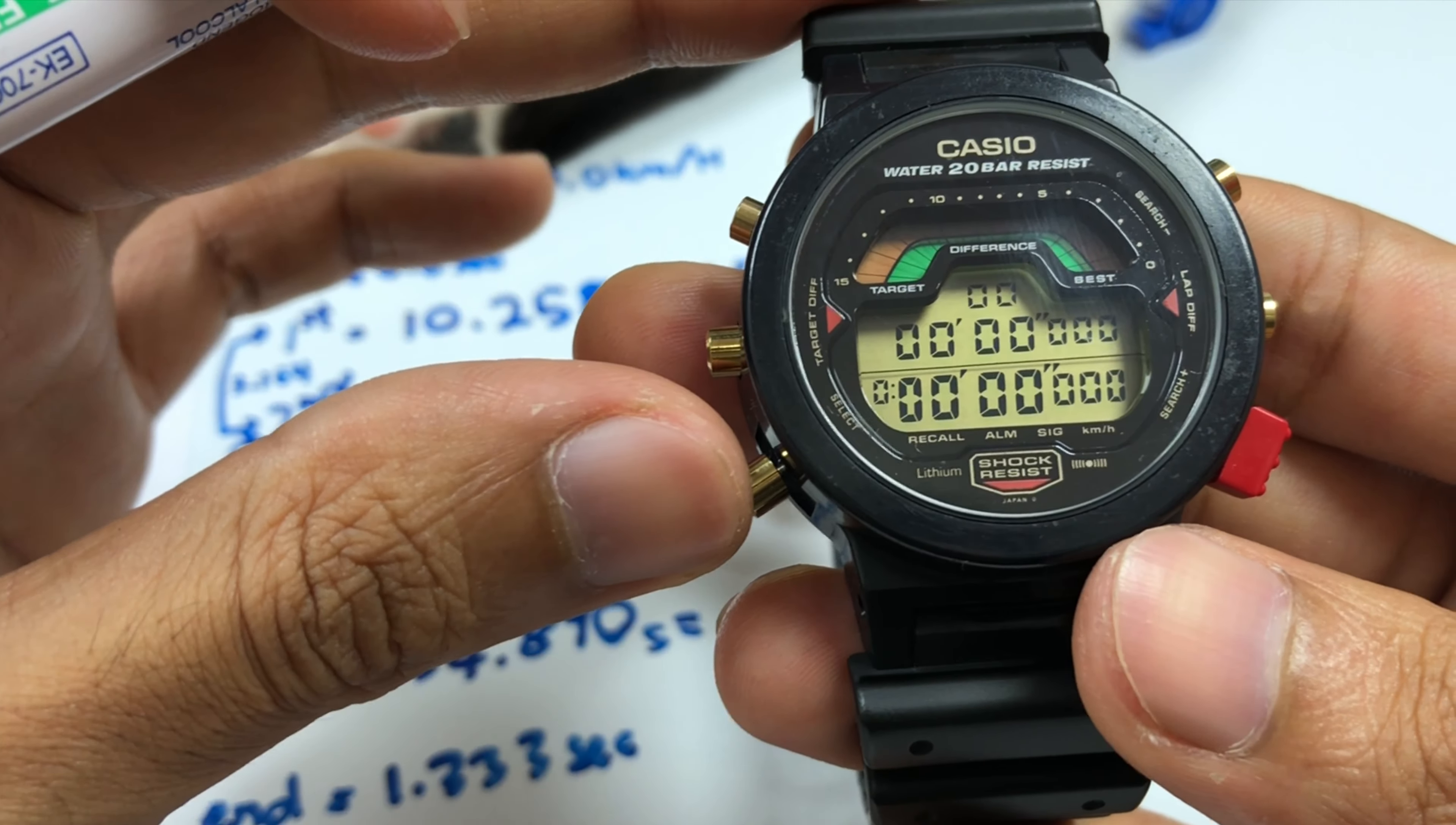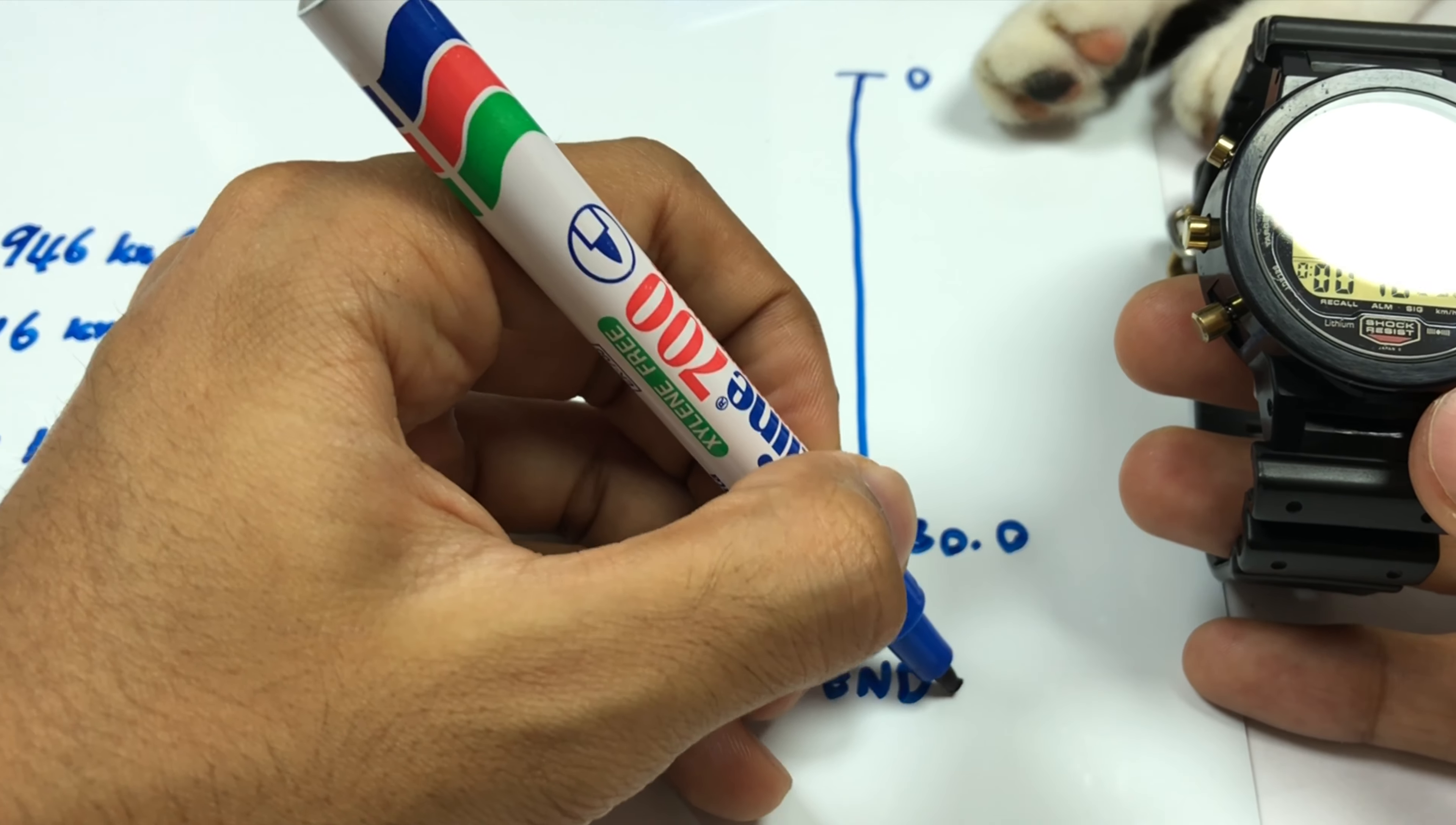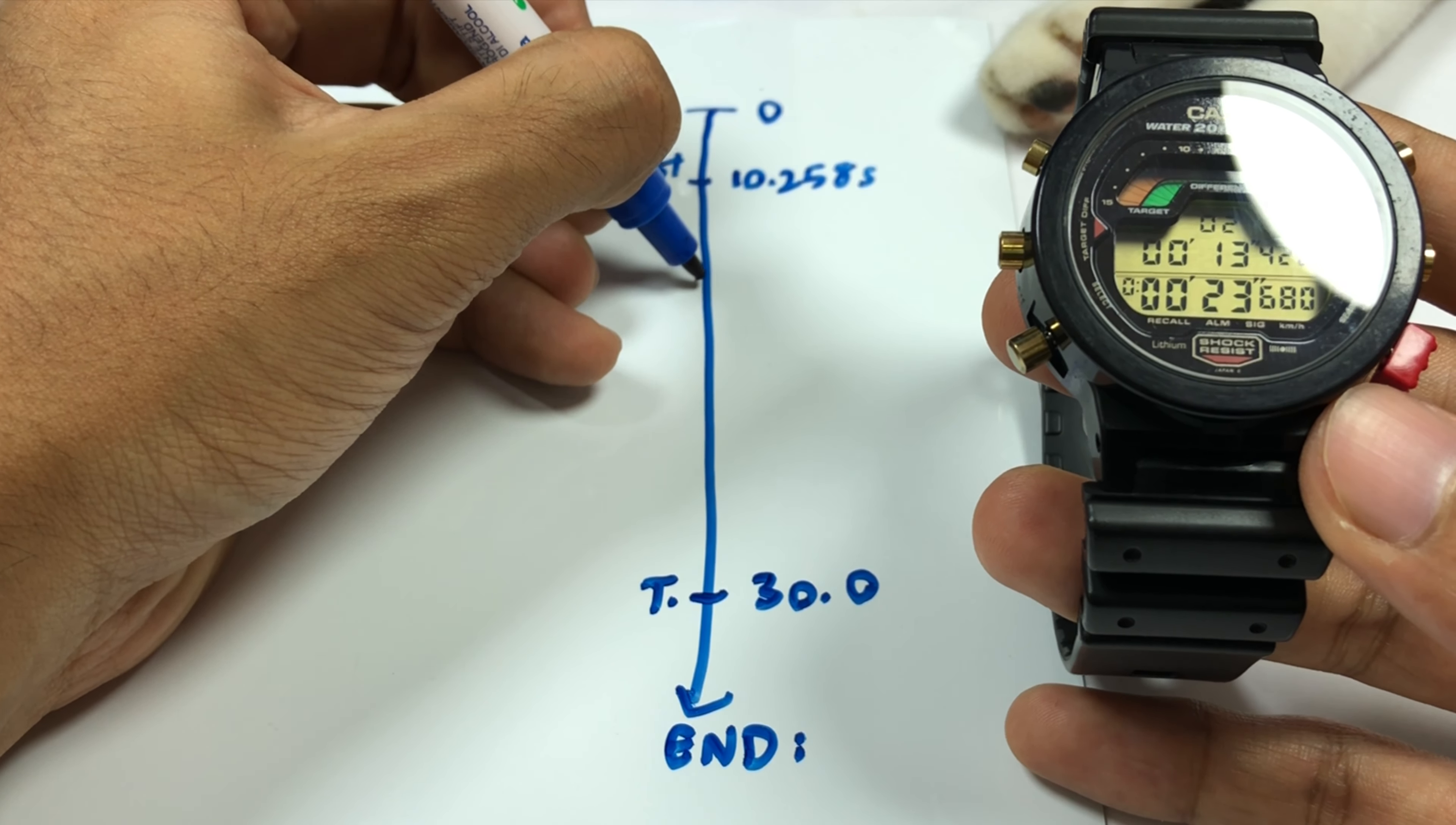Now let's move on to recall mode. Let me plot our time so we have a chart. We start here, our target time is 30.0 seconds. This is the target, this is the start. Our first lap, zero one, is at 10.258 seconds. This will be the last time. Our second lap, zero two, is at 23.680 seconds.